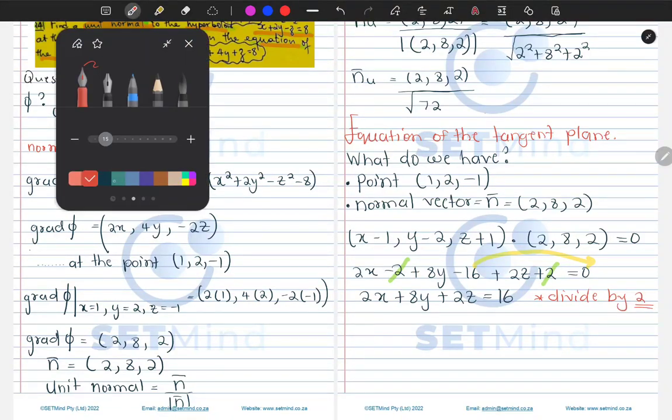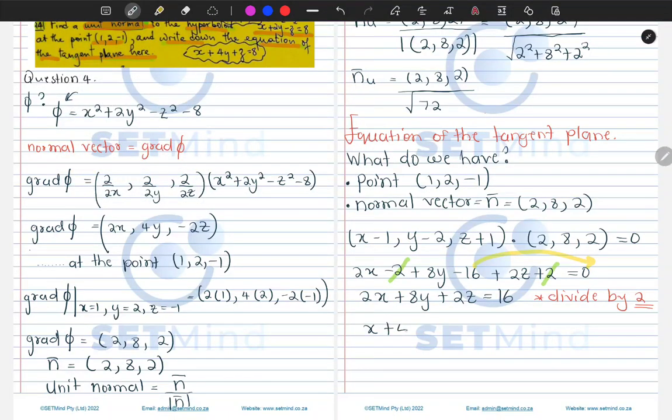So if we divide by 2, you will see that we will have x plus 4y plus z equals 8.